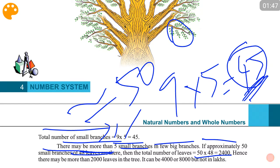Then 48 × 50 gives 2,400. Hence there may be more than 2,000 leaves in the tree. It can be 4,000 or 8,000 but not in lakhs. So we can conclude that the number of leaves will be in thousands, not in lakhs.